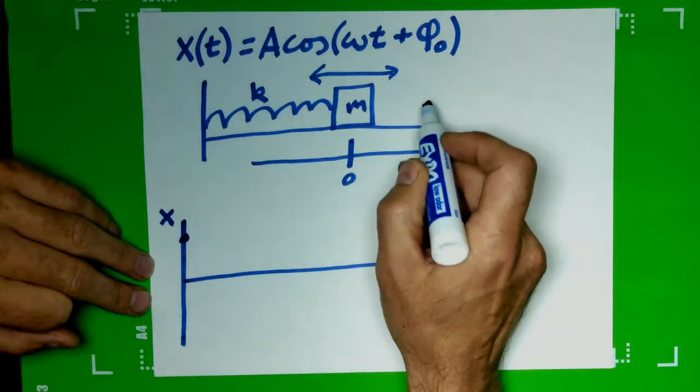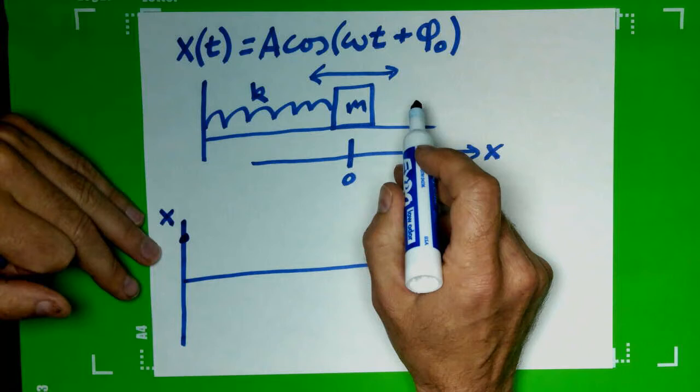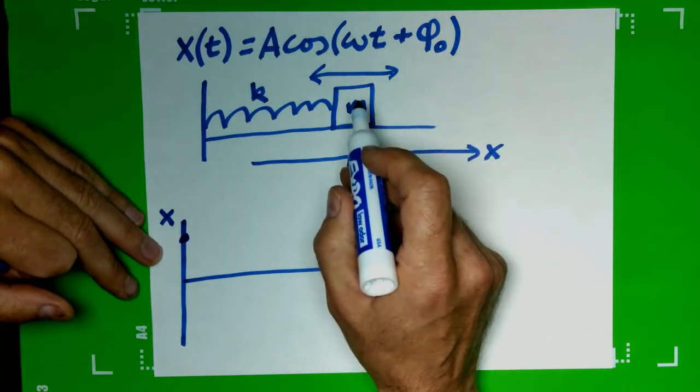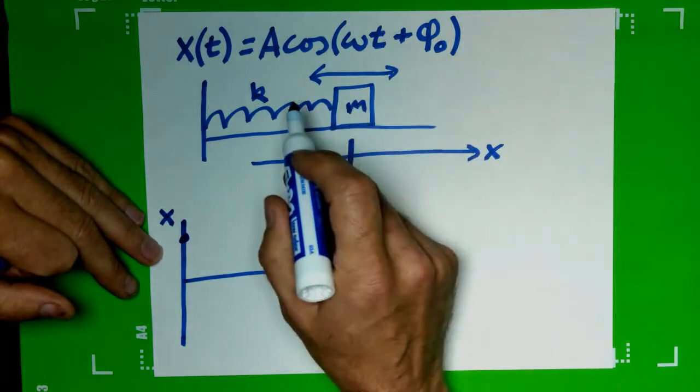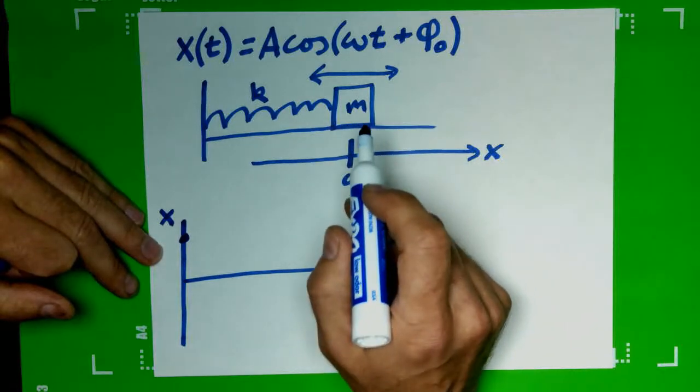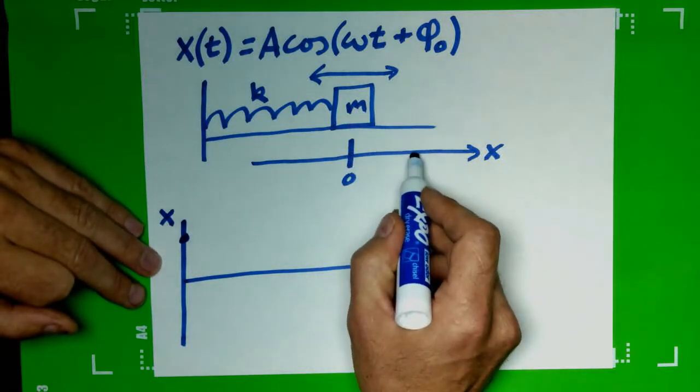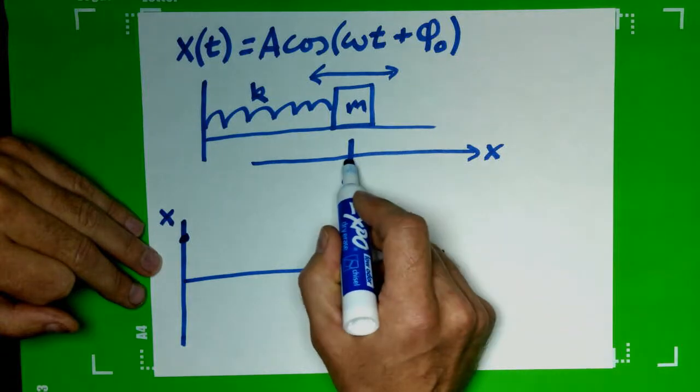And then when we let go, what's it going to do? Well the spring has been stretched and so the spring is going to pull it back towards equilibrium. Springs always try and pull towards equilibrium. So it's going to come closer to here, going from a positive value of x towards zero.